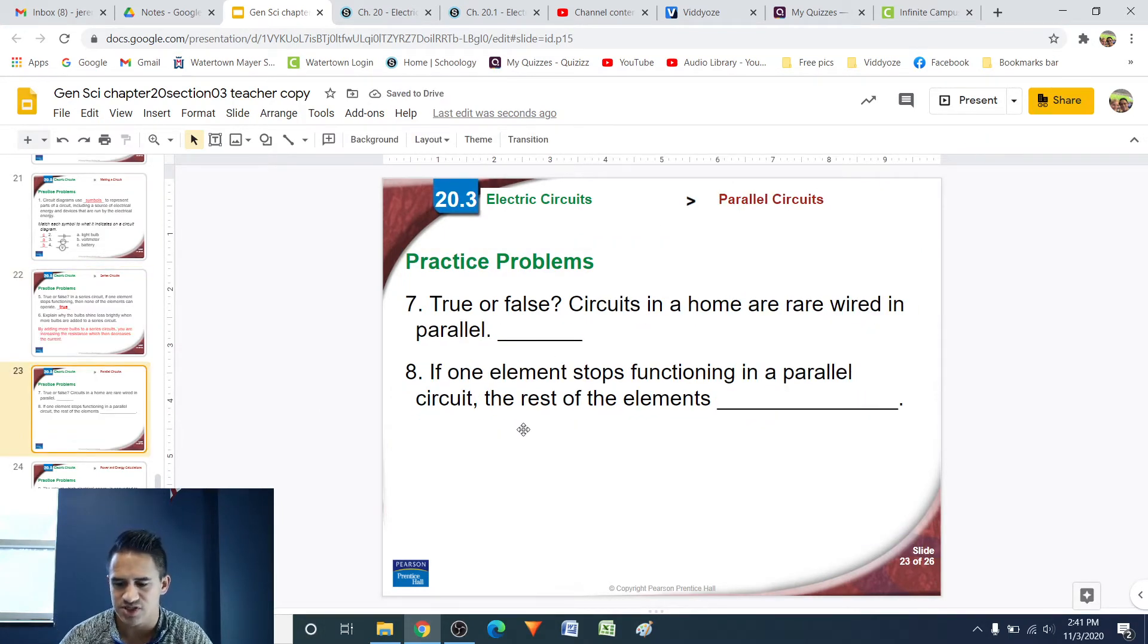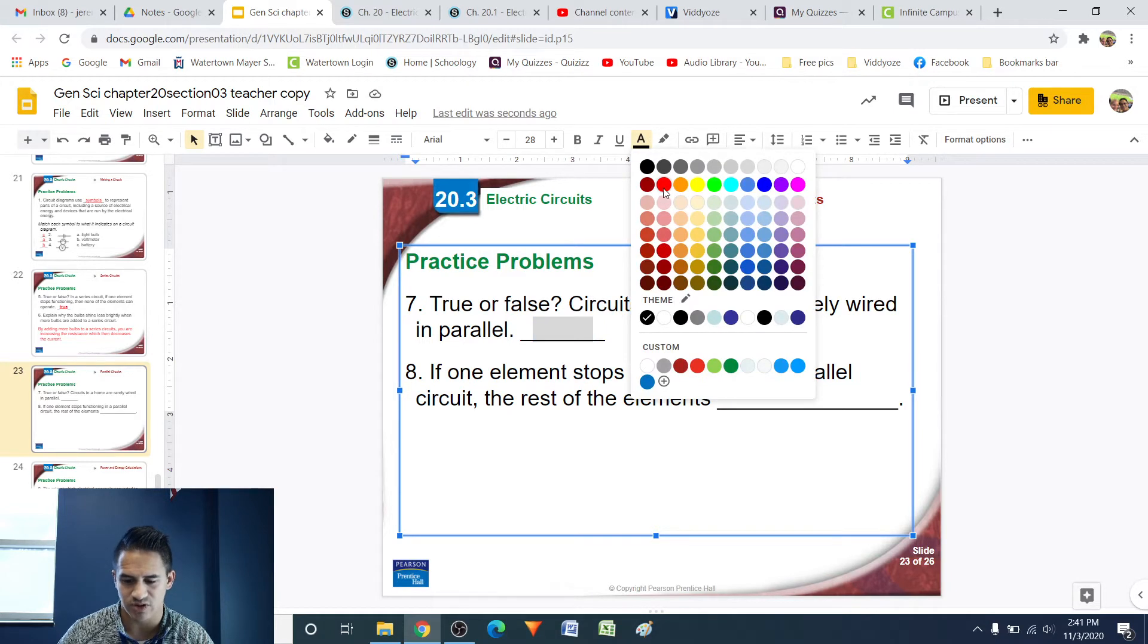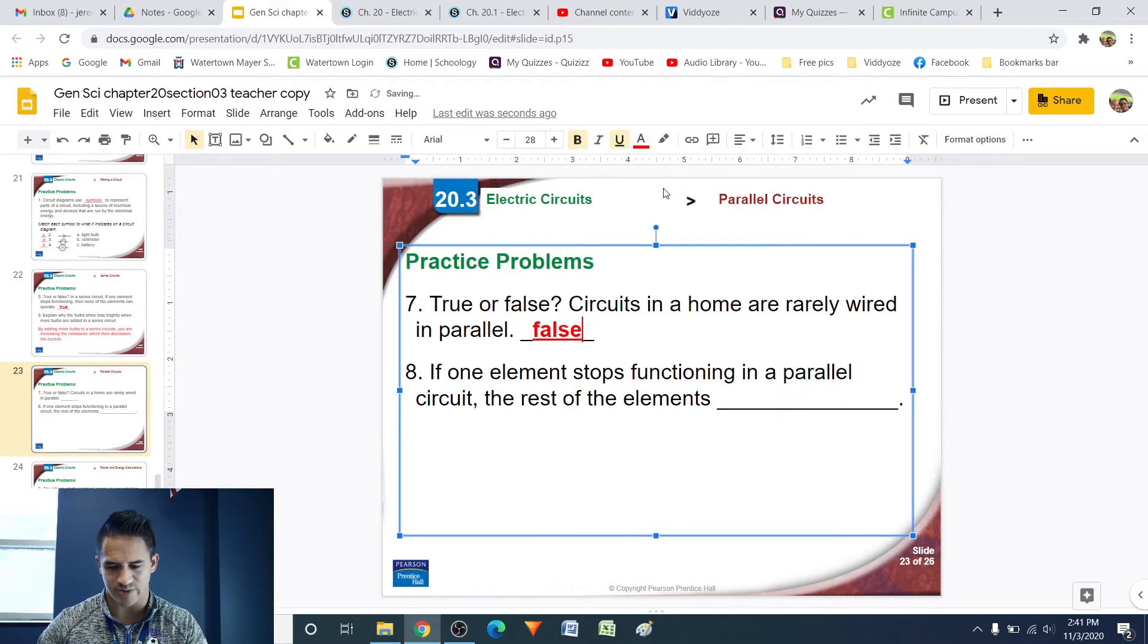Number 7, true or false, circuits in a home are rarely wired in parallel. That's false. Most circuits in a home are actually wired in parallel because if one part of your home loses power, we don't want the whole home to lose power, we just want that one part. So, that's actually false. Most of your homes are wired parallel.